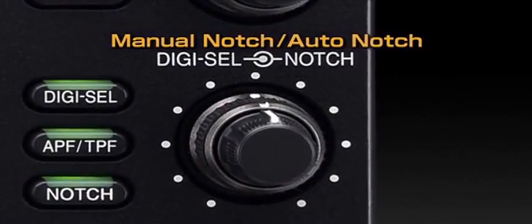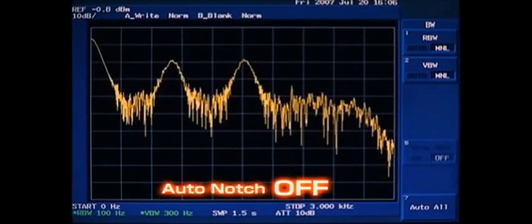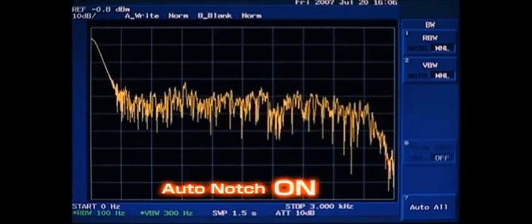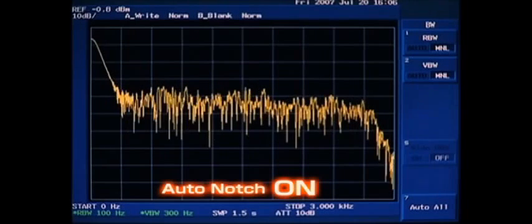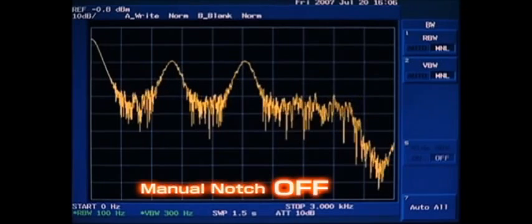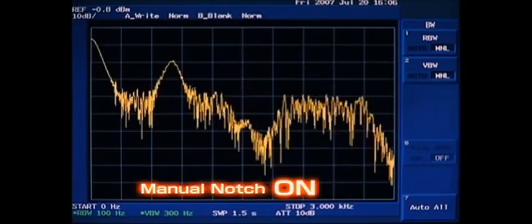The manual notch filter controlled by the DSP unit has extremely sharp characteristics and provides more than 70 dB of attenuation. The notch filter width is selectable from three types allowing you to select the suitable filter width depending on the operating mode and band. It eliminates persistent beat tones without affecting the AGC loop function.